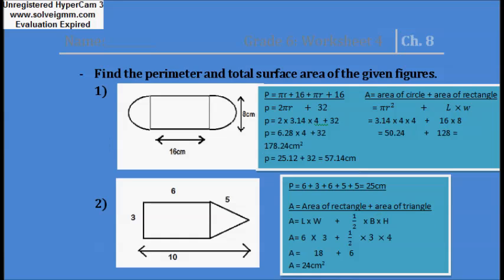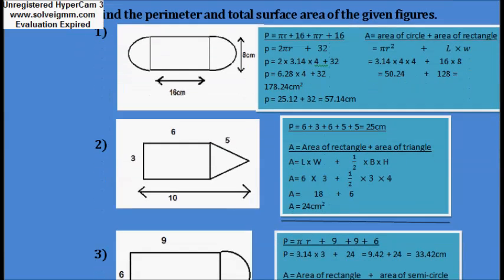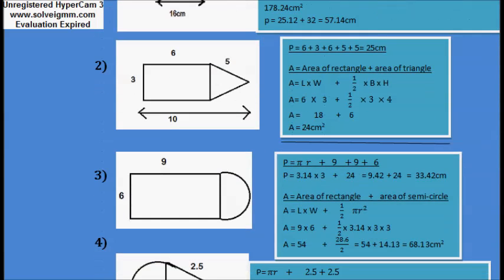In question number 2, again you have to find the perimeter and area of this figure. To find the perimeter, you will add 6, then 5, then again 5 because this is an isosceles triangle — in an isosceles triangle the two sides are equal. Then add 6, and finally 3. So perimeter equals 6 plus 3 plus 6 plus 5 plus 5, which equals 25.